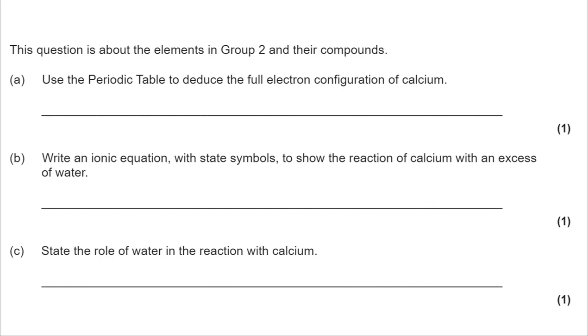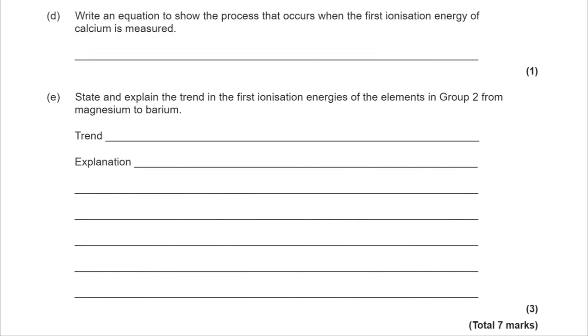This is an AQA A-level chemistry question based on the atomic structure and group 2 topics. Try each section, pausing as you go, and then review. So here's parts A, B, and C. And here are parts D and E. So a total of 7 marks to be attained.